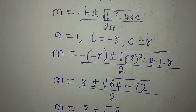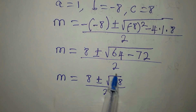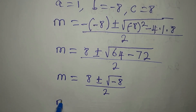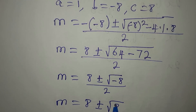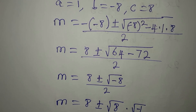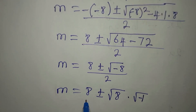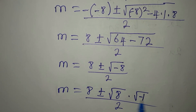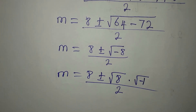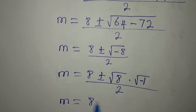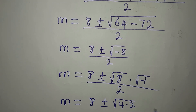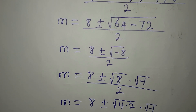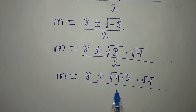Now I want to split this. So m equals 8 plus or minus square root of 8 multiplied by square root of negative 1, divided by 2. We can write square root of 8 as square root of 4 times 2, then times square root of negative 1, all divided by 2.